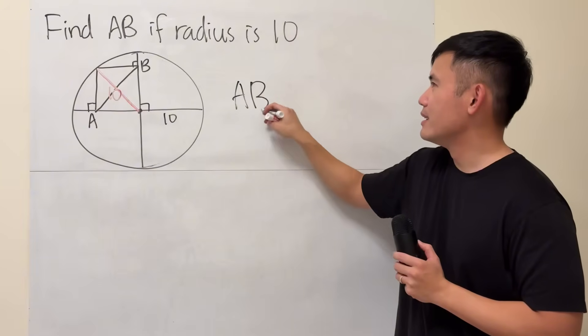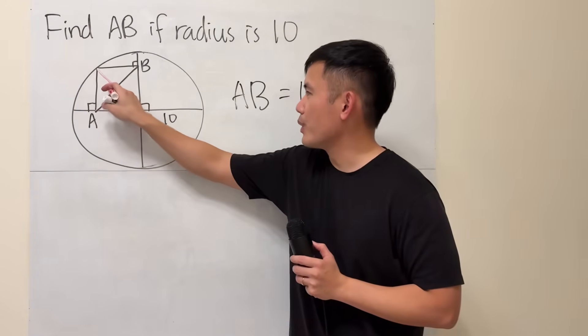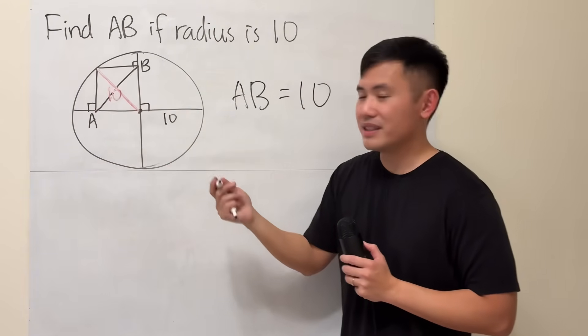So AB is equal to 10, because it's the same as the red one. And my markers are running out of ink. But that's it!